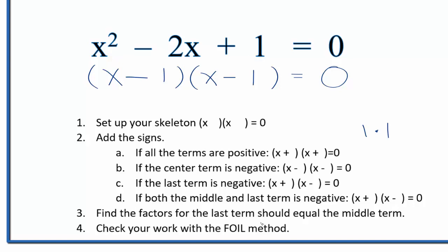We can check that with the FOIL method. Multiply the first terms: x times x, that's x². Plus the outside: x times -1, that's -1x. Inside: -1 times x, that's -x. And then the last term: -1 times -1, that's positive 1. All that equals 0.